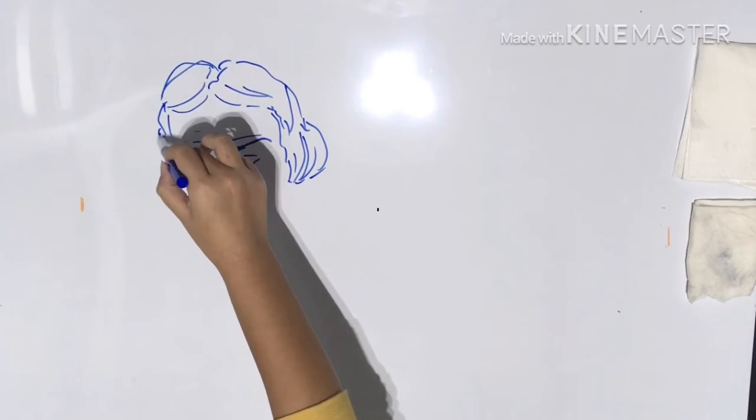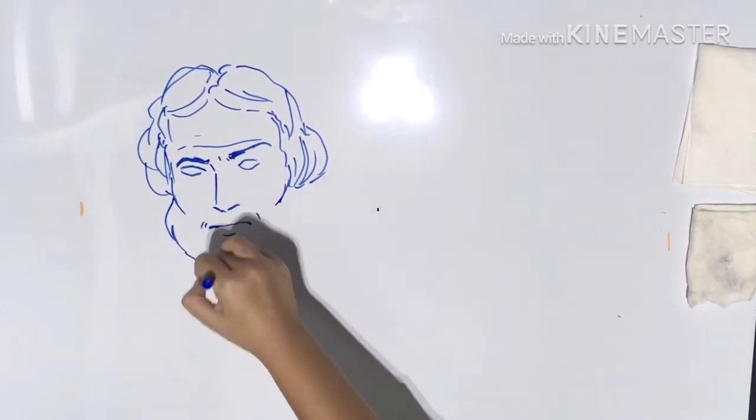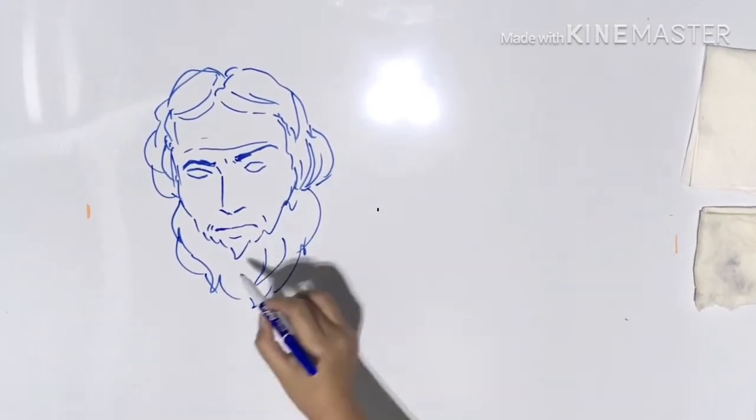The Astrolabe was created by Greek astronomers and was written about by Greek scholars, but the invention was introduced to Islamic scholars.